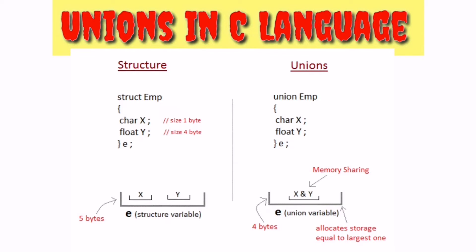The union can have different data types as members — for example, character and float. The size of character and float members are declared here, and values are accessed using dot operators.